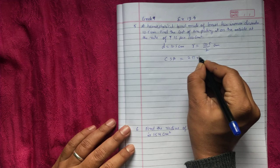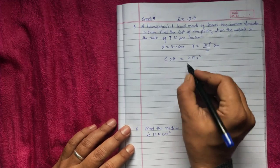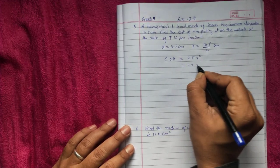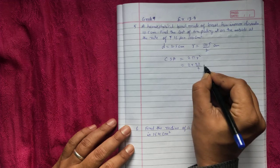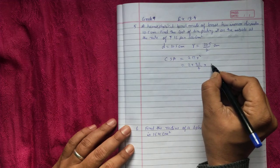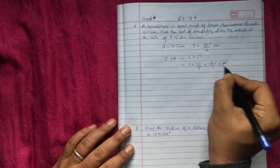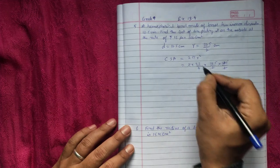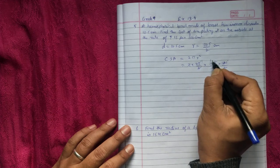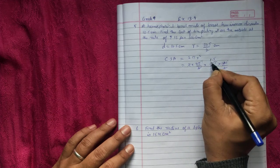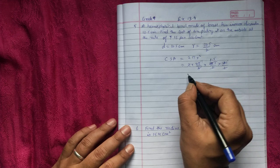CSA will be 2 pi R square for hemisphere. 2 times 22 by 7 times 10.5 by 2 times 10.5 by 2. You can cut 2 times 2, 2 times 11 times 7 times 1.5, you can multiply.